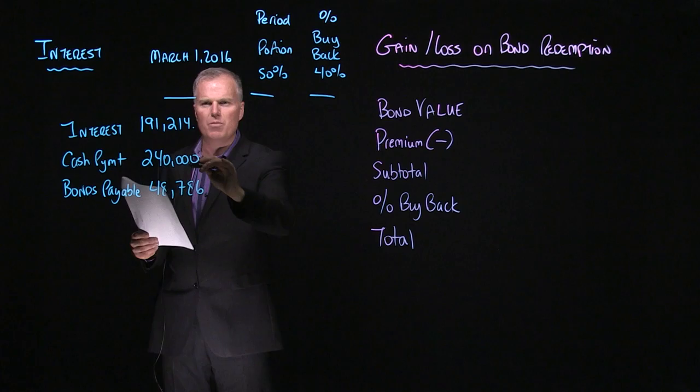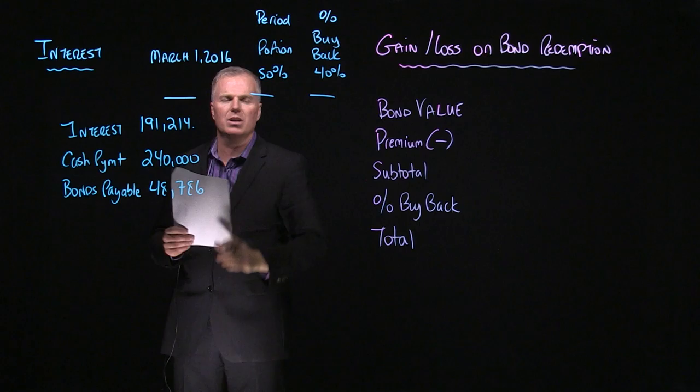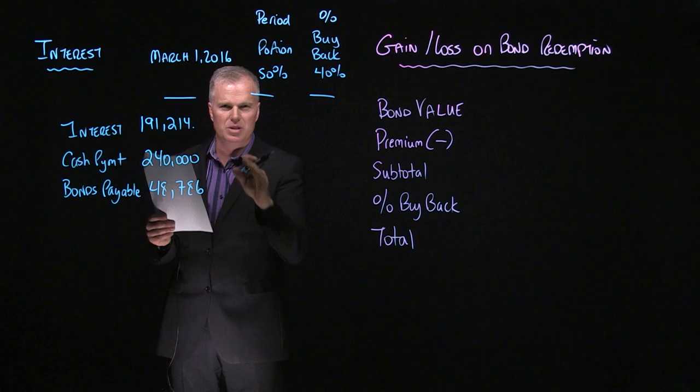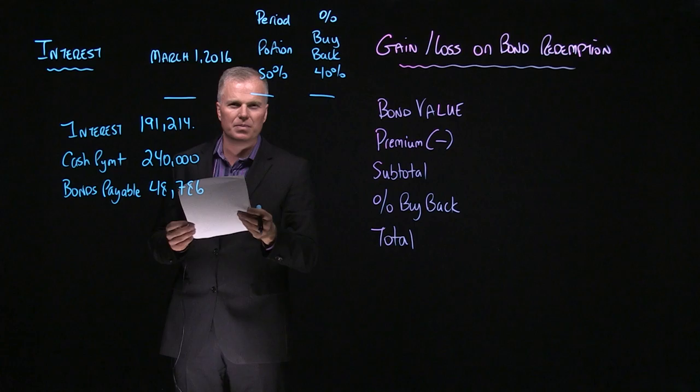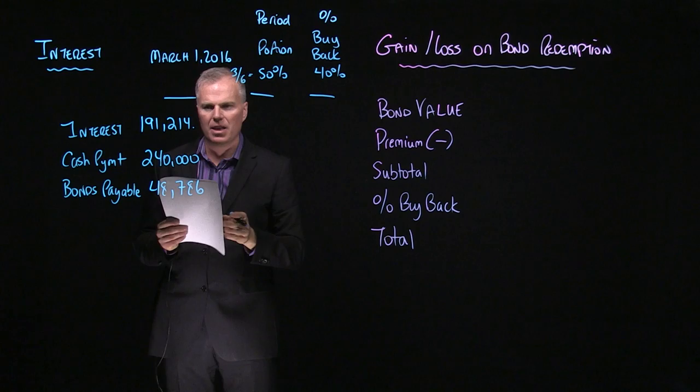Now what we do is we take this information and we multiply it a couple times. But what do we multiply it by? Well, the first part that we multiply it by is the period portion. So what we have to do is we have to calculate how much time has occurred in the bond redemption part. So if the bond, for example, paid interest on December 1st, which is this question, and the redemption is going to occur on March 1st, we have to deal with December, January, and February. That's three out of the six months.